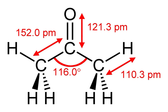Although acetone occurs naturally in the environment in plants, trees, volcanic gases, and forest fires, and is a product of the breakdown of body fat, the majority of the acetone released into the environment is of industrial origin. Acetone evaporates rapidly, even from water and soil. Once in the atmosphere, it has a 22-day half-life and is degraded by UV light via photolysis primarily into methane and ethane. Consumption by microorganisms contributes to the dissipation of acetone in soil, animals, or waterways. The LD50 of acetone for fish is 8.3 grams per liter of water, and its environmental half-life in water is about 1 to 10 days. Acetone may pose a significant risk of oxygen depletion in aquatic systems due to microbial consumption.